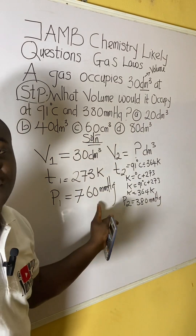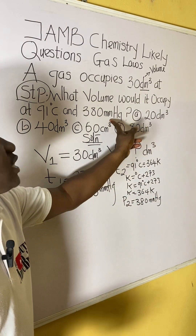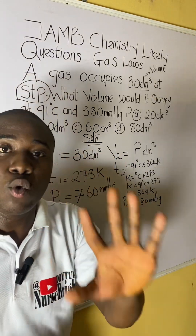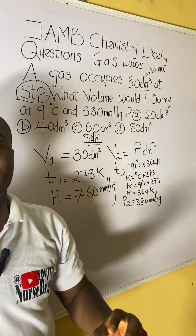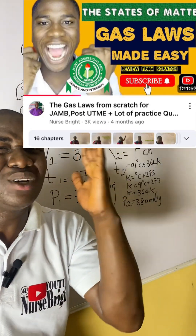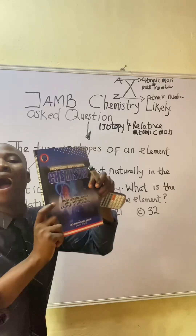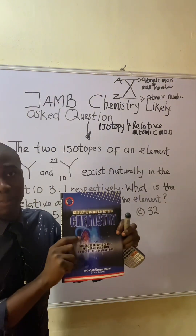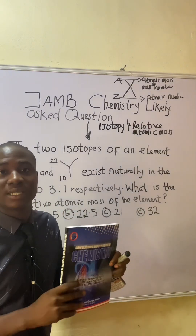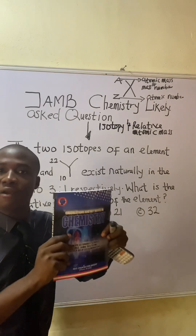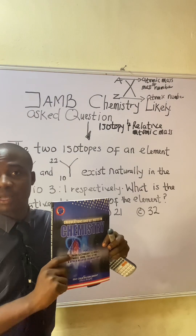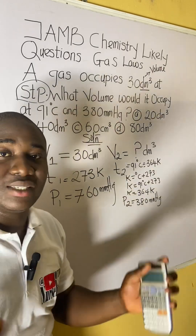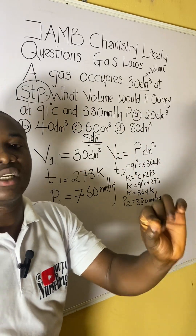The second pressure, P2, is 380 mmHg. Since the first pressure was also in mmHg, the units are consistent — we are okay. However, if the two pressures were in different units, you would need to convert them to the same unit. Now we have brought out all the parameters: V1=30 dm³, T1=273 K, P1=760 mmHg, T2=364 K, P2=380 mmHg, and V2 is unknown.